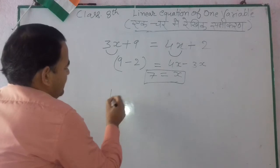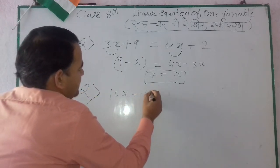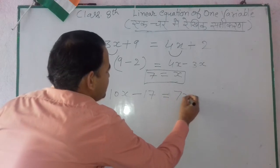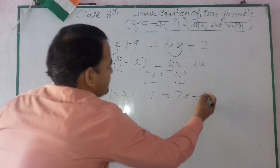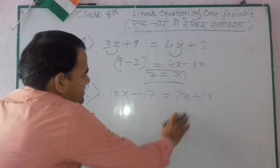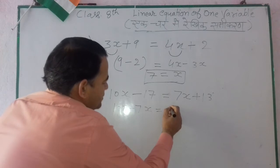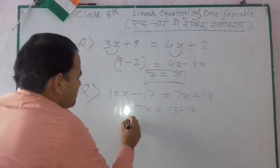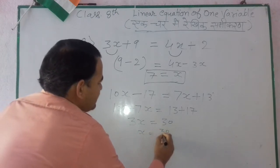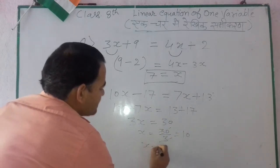Let's take one more example: 10X minus 17 equal to 7X plus 13. We send 7X to the left side: 10X minus 7X. The minus 17 goes to the right side and becomes positive: 13 plus 17. So this becomes 3X equal to 30. X equal to 30 by 3, which cancels to give X's value as 10.